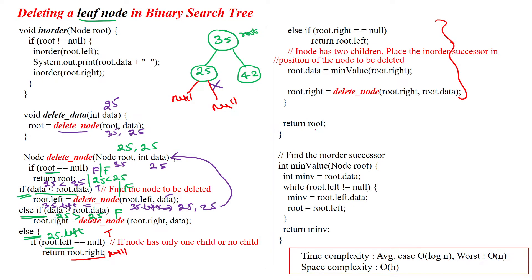The if block is complete and we return the root, which is 25, back to the method call. That is the way to delete the node which is available as a leaf in the given tree. Thanks for watching.